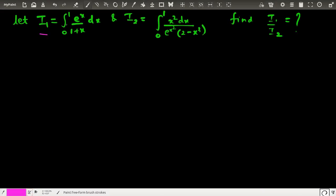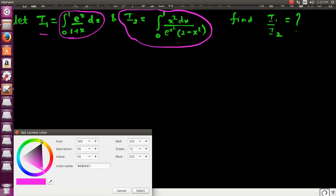I₁ is the integration from 0 to 1 of e^x/(1+x), and I₂ is this integration. We have to find whether we can express I₂ in terms of I₁ or vice versa. Let's see the solution.